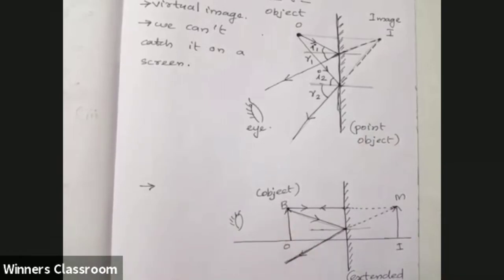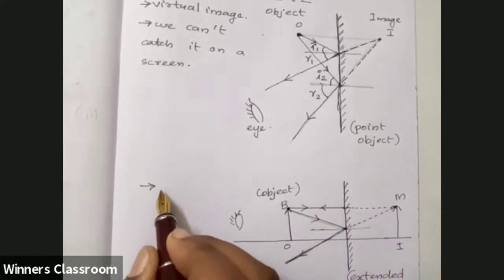the image formed is erect. See, where is the object? The object is erect. It seems to come from here. Head is in the same position. So it is erect.